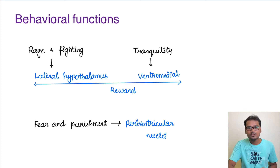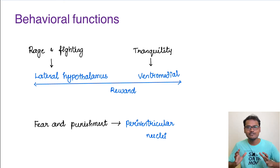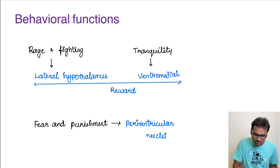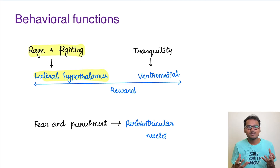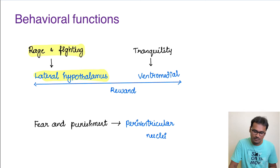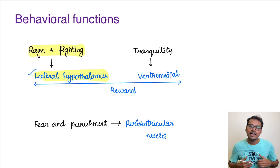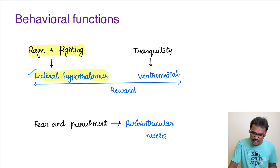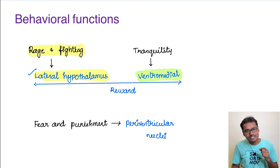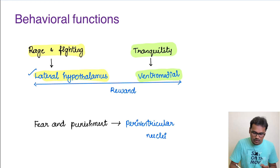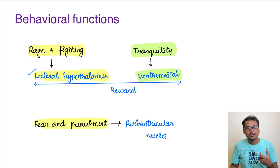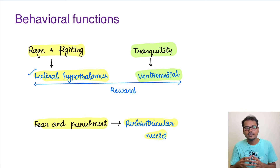For behavioral functions: when we are hungry we get agitated and feel rage — the lateral hypothalamus is involved in rage and fighting. The ventromedial nucleus, on the other hand, is involved in tranquility and calmness. The periventricular nuclei, surrounding the ventricular structure, are the centers for fear and punishment.